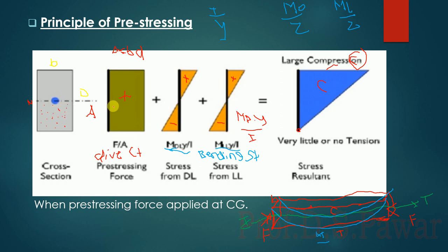In pre-stressed concrete, this part of the section has compression forces. Now this compression force is carried by the concrete. So we make the full section work effectively by introducing this compression force in the member. This case is when the pre-stressing force is applied at the CG.